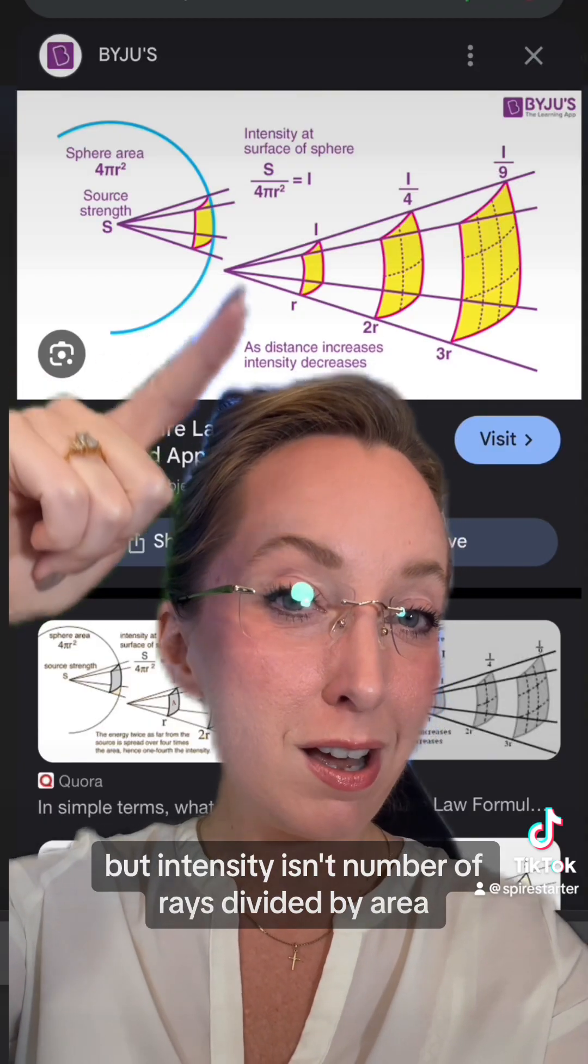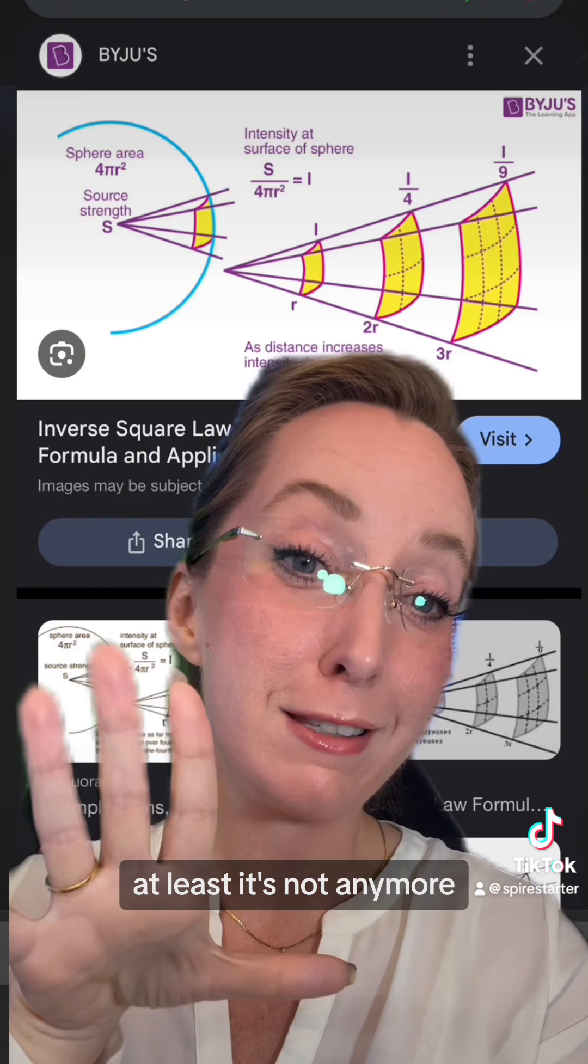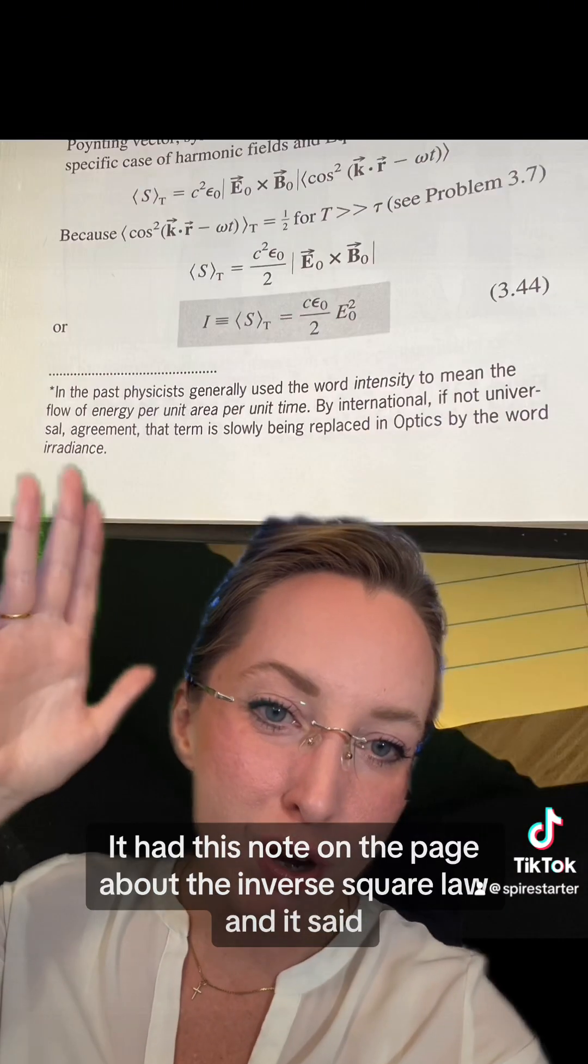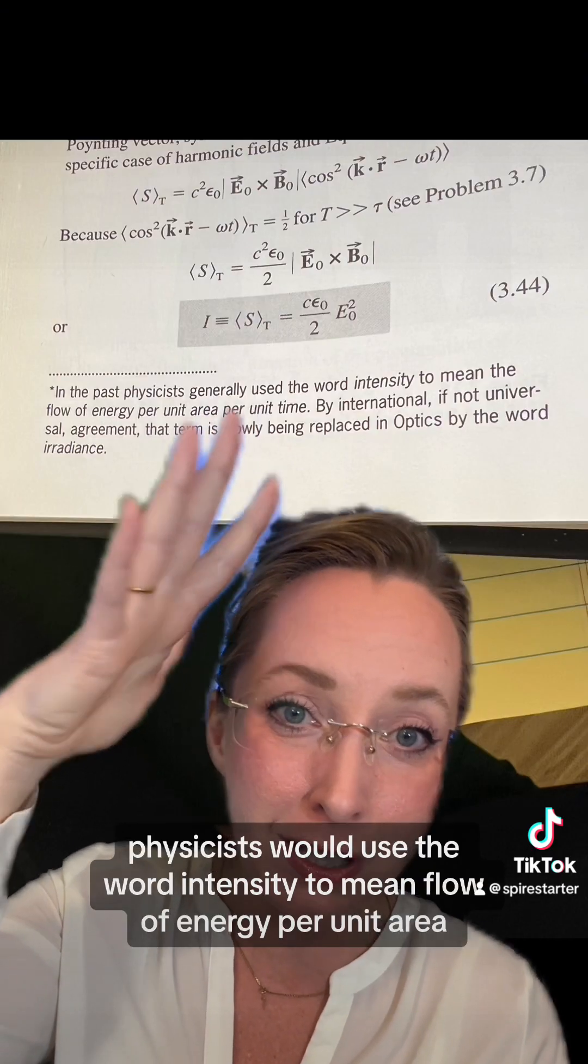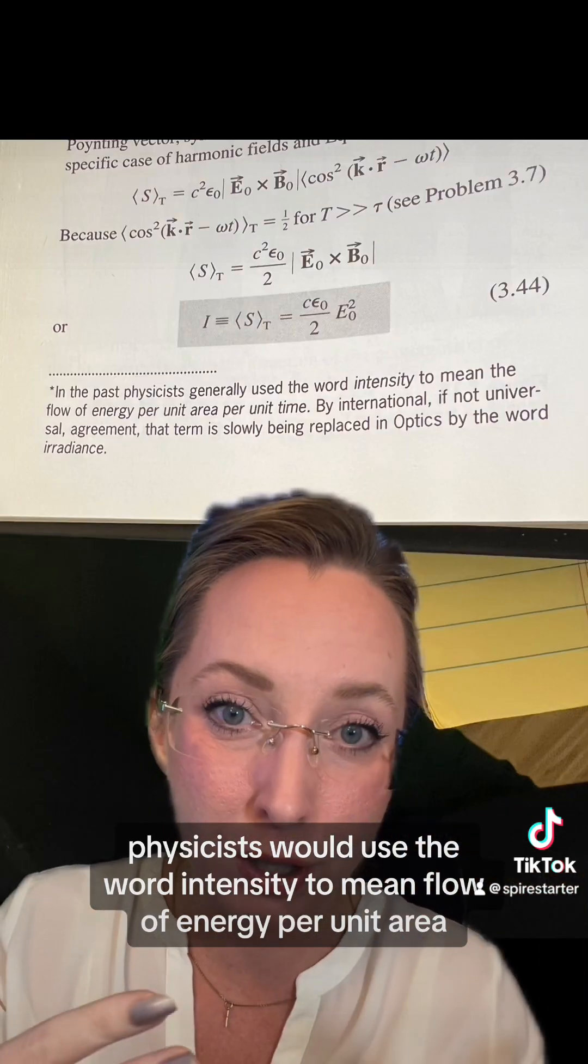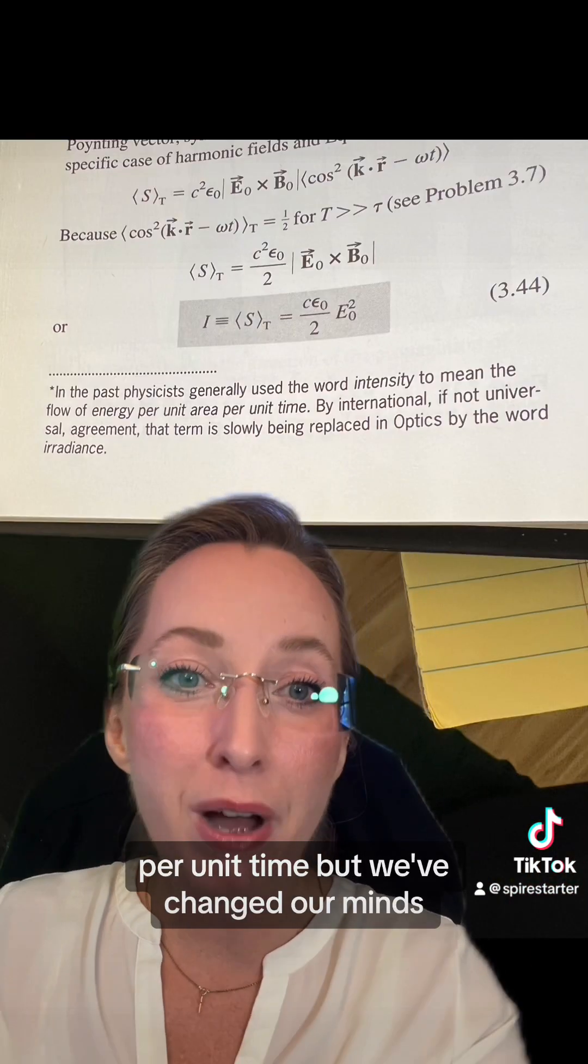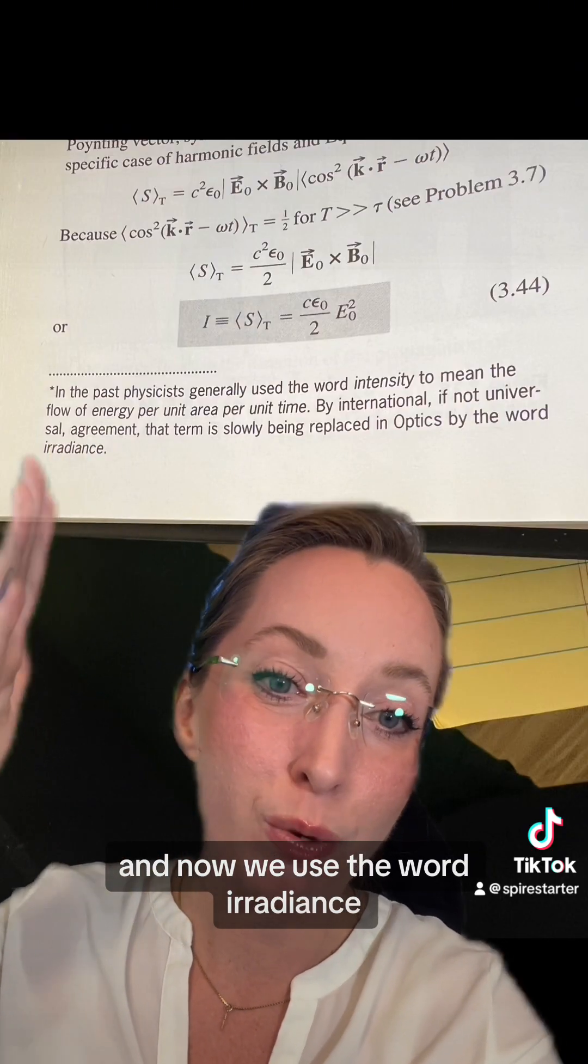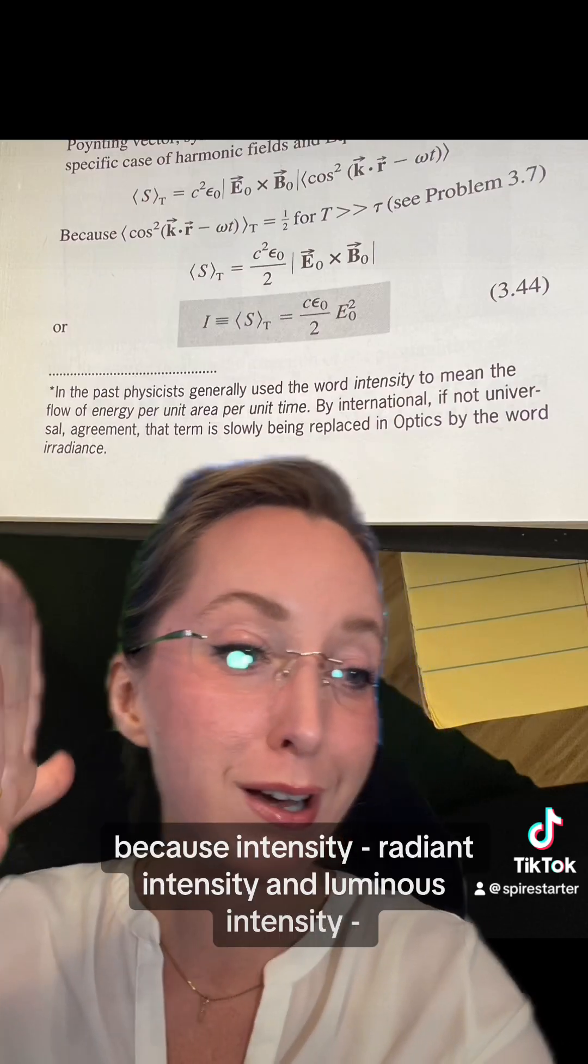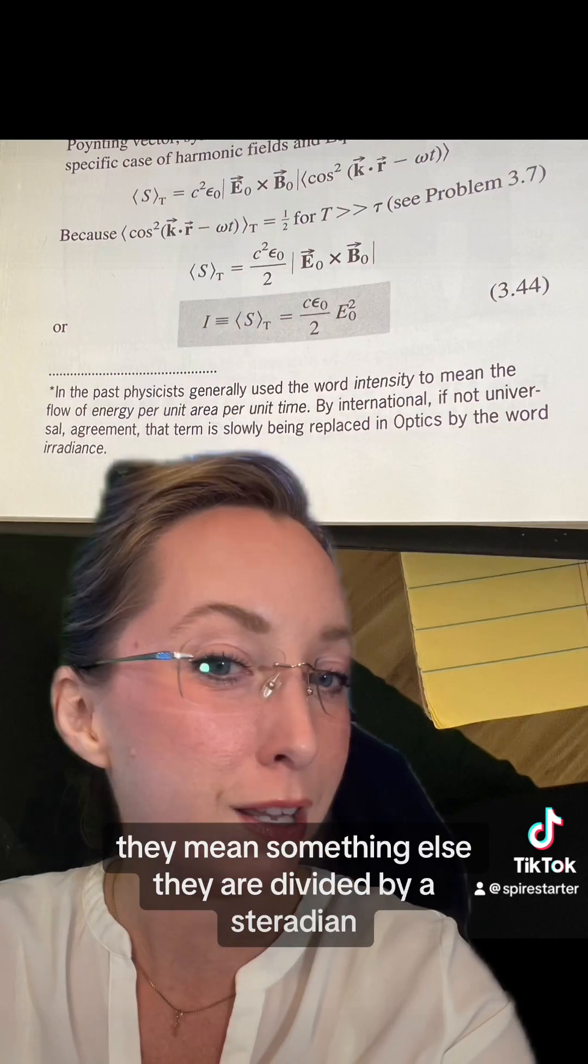But intensity isn't number of rays divided by area. At least it's not anymore. I refer to my textbook copyrighted in 2002. It had this note on the page about the inverse square law and said in the past, generally physicists would use the word intensity to mean flow of energy per unit area per unit time. But we've changed our minds. And now we use the word irradiance. Why is that? Well, because intensity, radiant intensity, and luminous intensity, they mean something else.